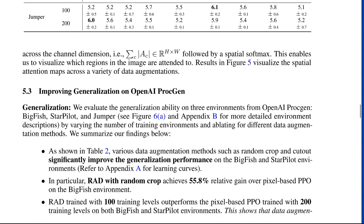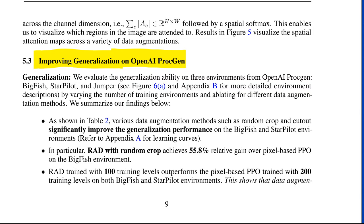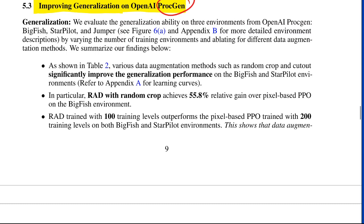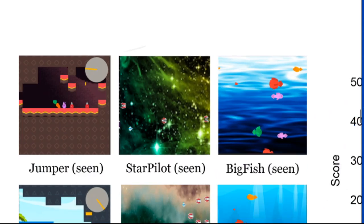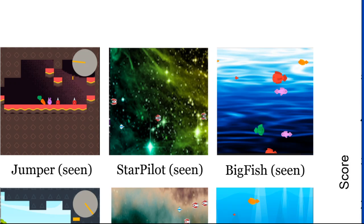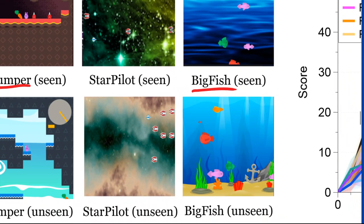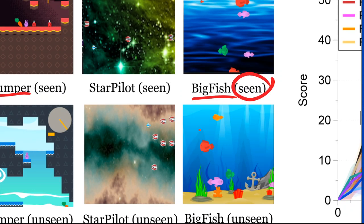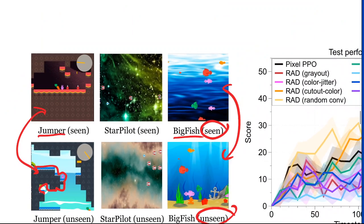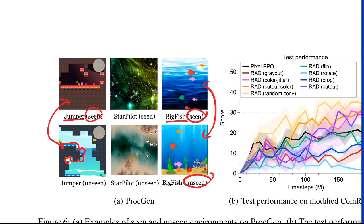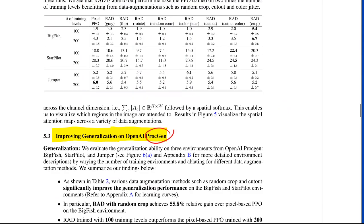The last thing they do is they investigate generalization performance on this OpenAI proc gen. This is a reinforcement learning task or suite of tasks where you have procedurally generated levels. So you can sort of train on a bunch of levels and then test the generalization to new levels that you haven't seen before. So there's a jumper here and star pilot. So they seem like a jump and run game or big fish. You can see that the levels seen here, this is one example, and unseen. In this example, the background is very different.